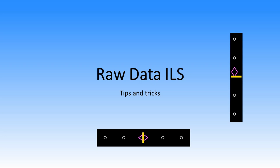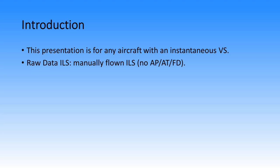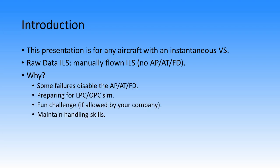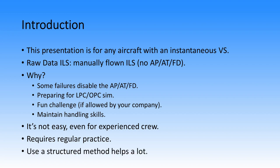This is a presentation about how to fly a Raw Data ILS — tips and tricks. This presentation is for any aircraft type with an instantaneous vertical speed indicator. A Raw Data ILS is a manually flown ILS with no autopilot, autothrust, or flight director. You would do this because some failures will disable the autopilot, autothrust, and flight director, or to prepare for an LPC or OPC simulator session. It's a fun challenge if allowed by your company and helps maintain your handling skills. Flying a Raw Data ILS is not easy, even for an experienced crew — it requires a lot of regular practice. Using a structured method helps a lot.